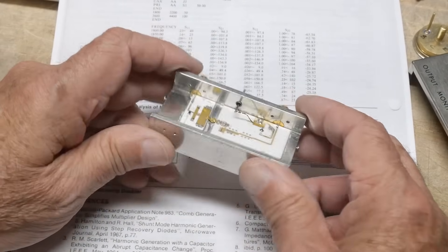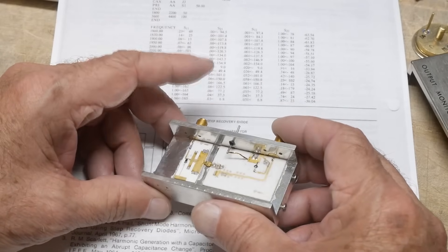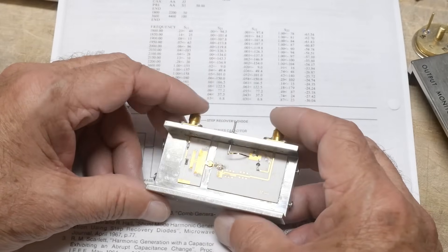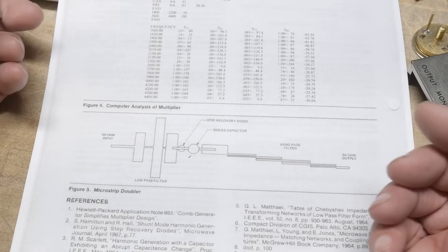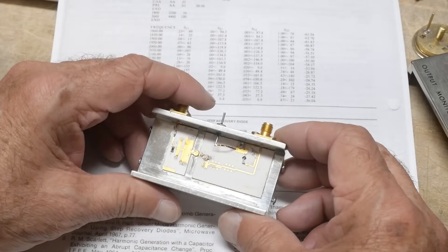Now there is this voodoo magic here for the strip line architecture and stuff. But you know, those are all, these days you just put numbers into calculators and stuff. You probably had to figure it out back in the day. But yeah, that's pretty cool.